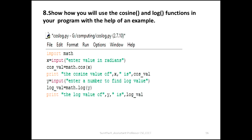First we will write the functions, then we will write x. We will write the cosine value using the mathematical function. The cosine function takes a radian value. So we write: cos_value = math.cos(x). The result is the cosine value of x, which is cos_value.